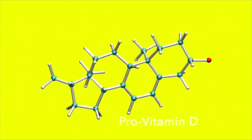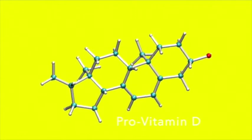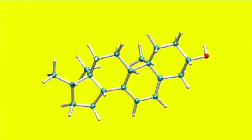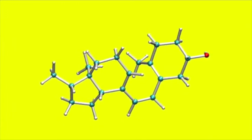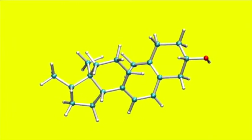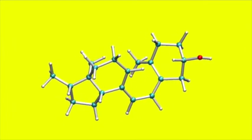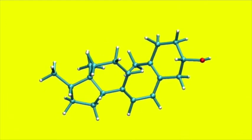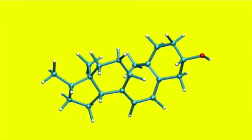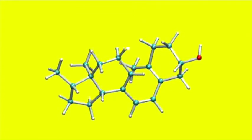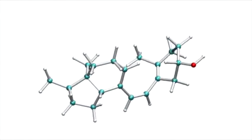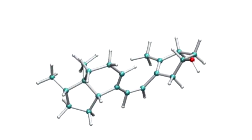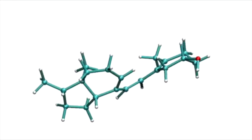Here we see an illustrative surface hopping trajectory of provitamin D. Right now the molecule is in its first excited singlet state. The change in electronic structure upon excitation weakens a carbon-carbon bond until it eventually breaks. When the molecule falls back to the ground state, a large amount of energy is transferred from the electronic to the nuclear degrees of freedom, inducing conformational changes and isomerization.